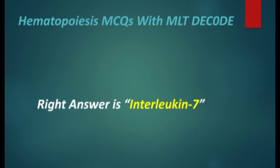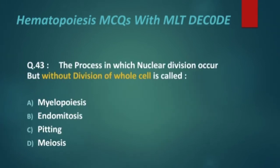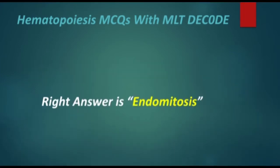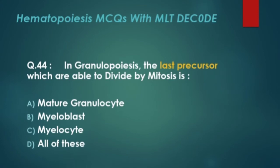The right answer is interleukin-7. Next, MCQ 43: The process in which nuclear division occurs but without division of the whole cell is called? Options are: myelopoiesis, endomitosis, pitting, and meiosis. The right answer is endomitosis.